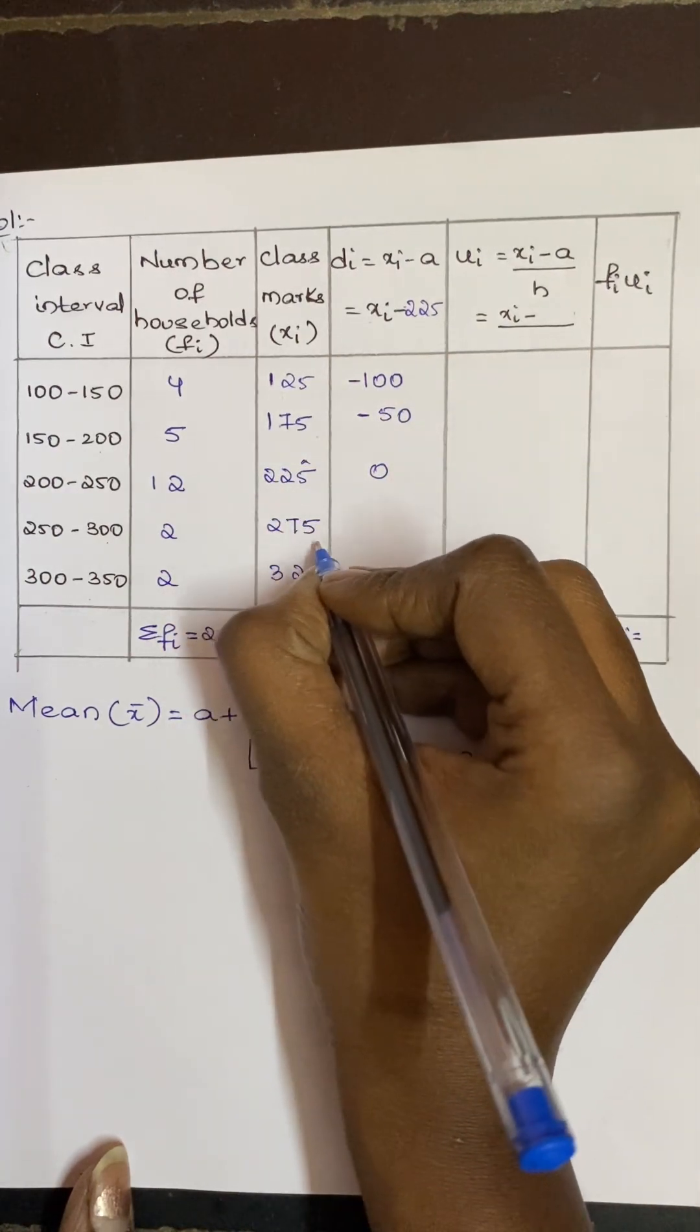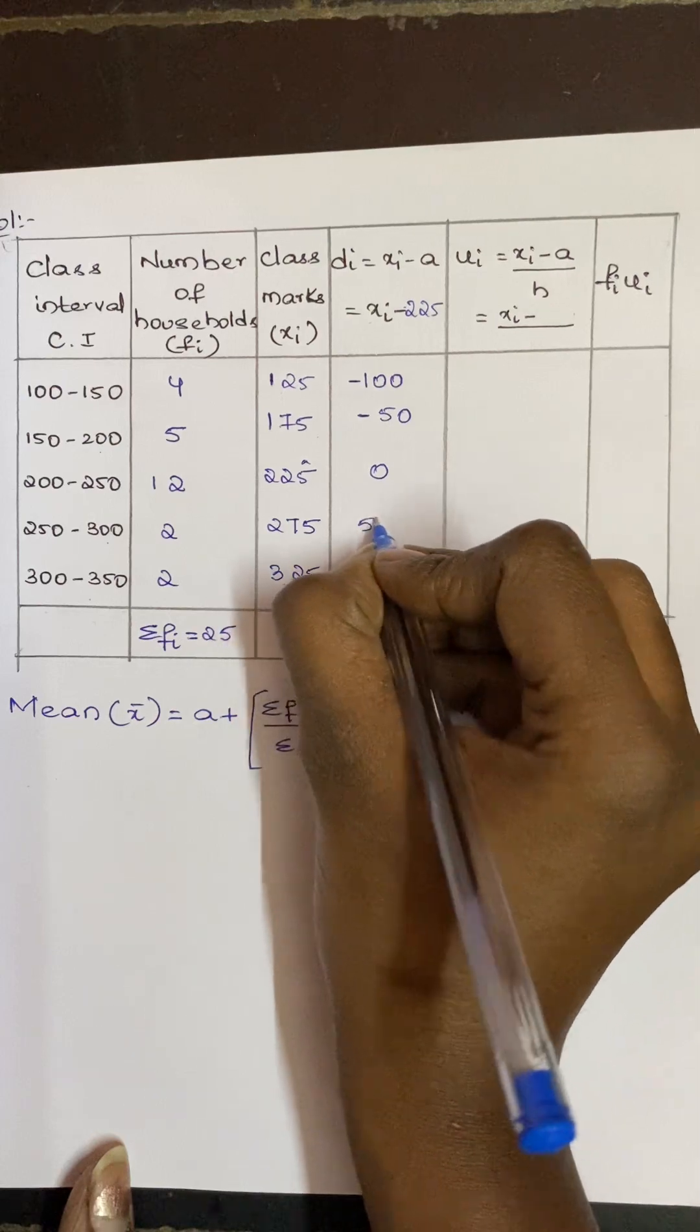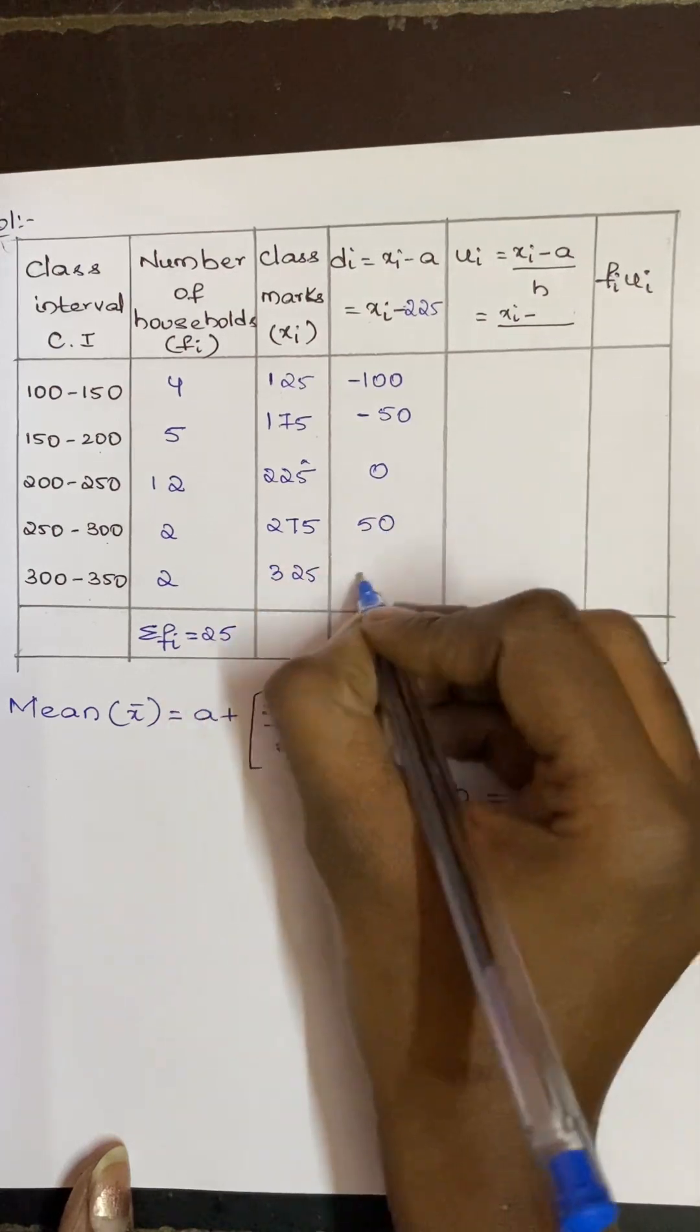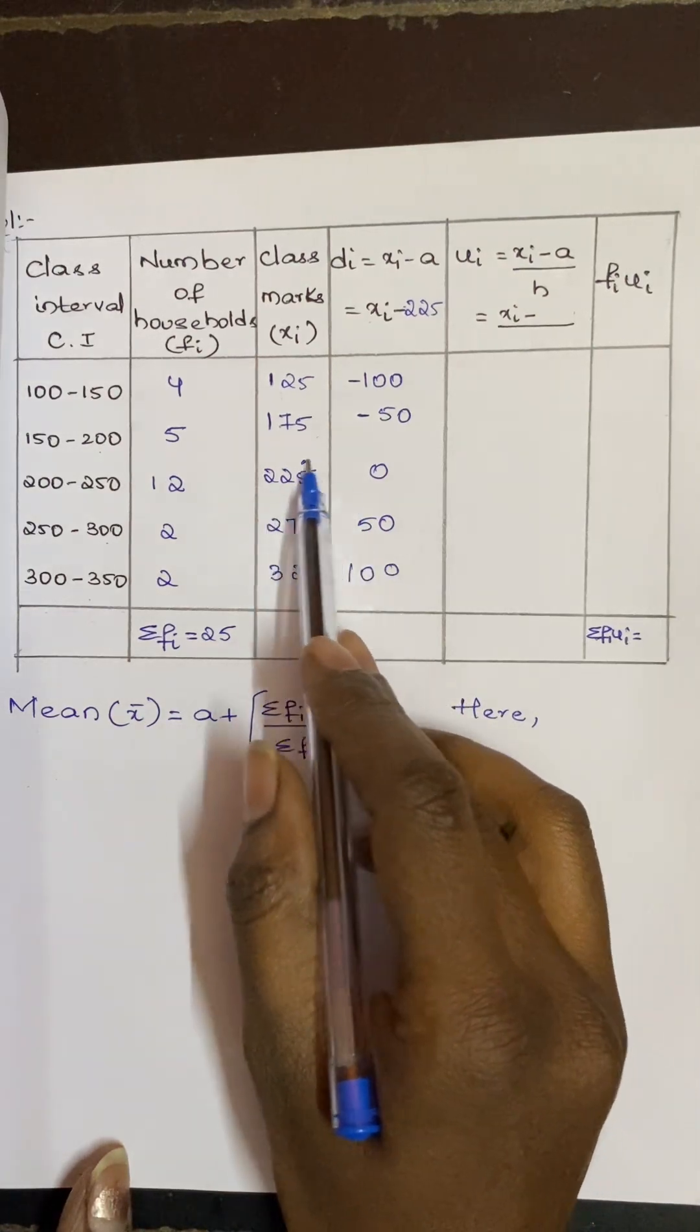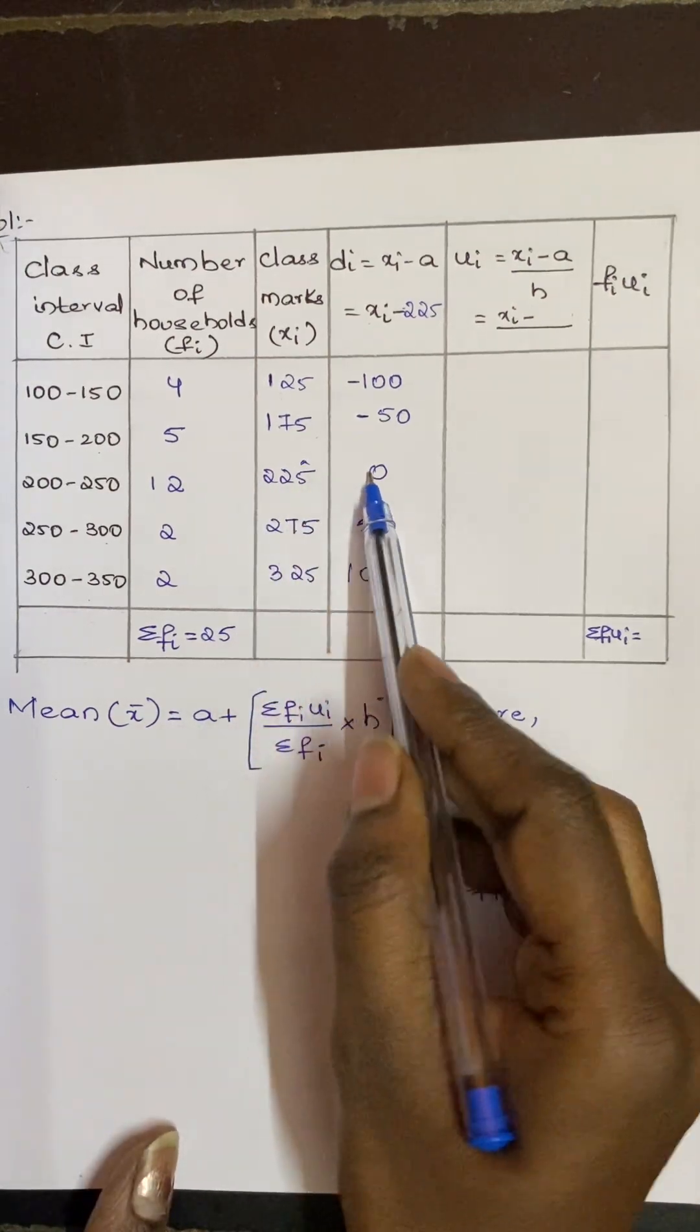275 minus 225 becomes 50, and 325 minus 225 is 100. So as I told, whenever there is a value, there you will get 0. The above will be negative, the below will be positive values.